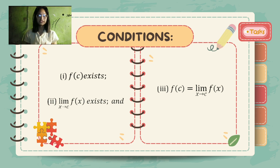First, the function value must exist. Second, the limit of the function as x approaches to c must also exist. And third, the first two conditions must be equal.